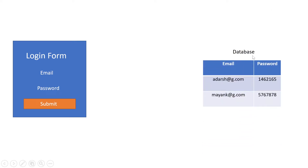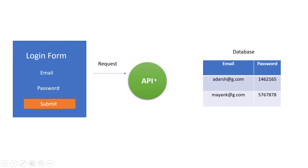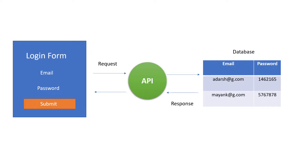Suppose this is the login form on our website and this is the database which stores our users' data. Now we want that whenever a user enters his email and password and clicks submit, there should be something that verifies whether the user exists in our database. So for that we need an API. When the user enters email and password and clicks submit, the website sends a request to the API to check whether the user exists in the database. The API sends a request to the database, the database sends a response back to the API, and that response is received by our website. So in this way, all the login authentication happens behind the scenes with the help of an API.